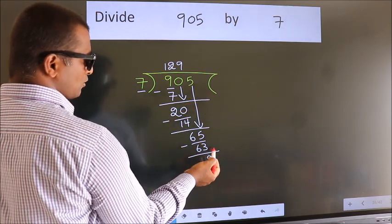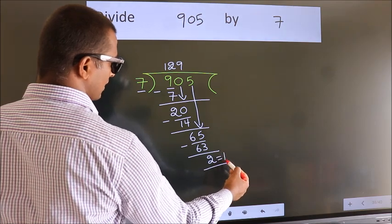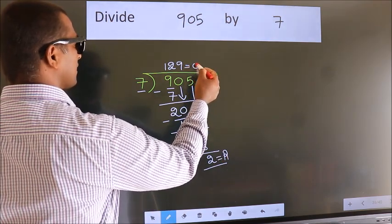No more numbers to bring it down. So, we stop here. This is our remainder. This is our quotient.